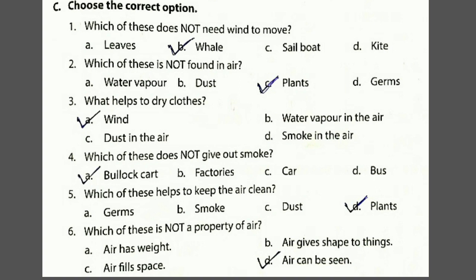Fifth: clean air makes us ill — that is also false. Clean air does not make us ill; it keeps us healthy. Then choose the correct option. First: which of these does not need wind to move? From the options — leaves need wind to move, but a well does not need wind to move. So the answer is option B, well. Sailboat and kite also need wind.